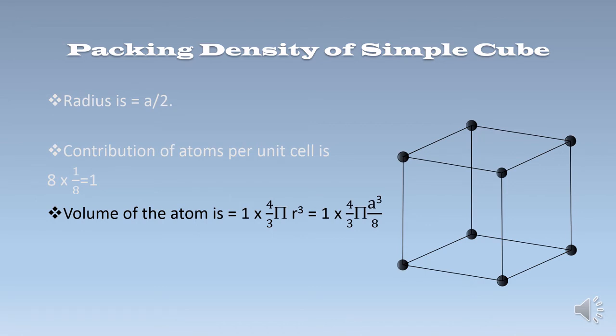Next, the volume of the atom for 1 atom per unit cell is 1 × (4/3)πr³. Putting the value of R, we get (4/3)π × (A/2)³ = A³/8 × (4π/3), where R is the radius of the sphere of the atom per unit cell.